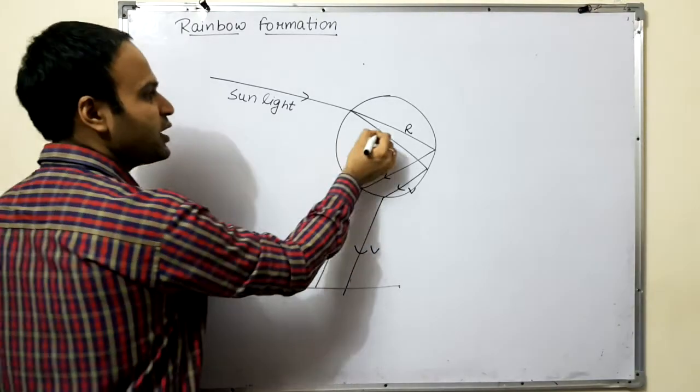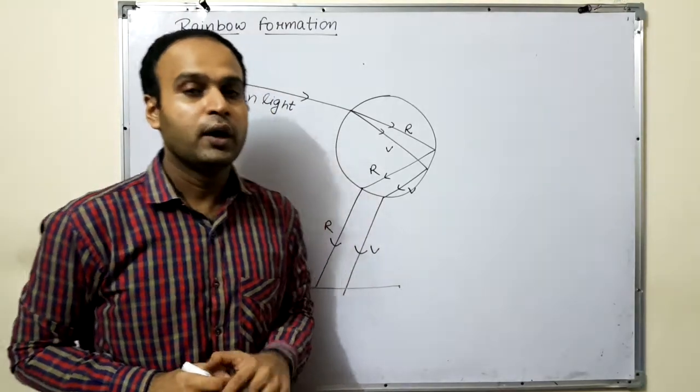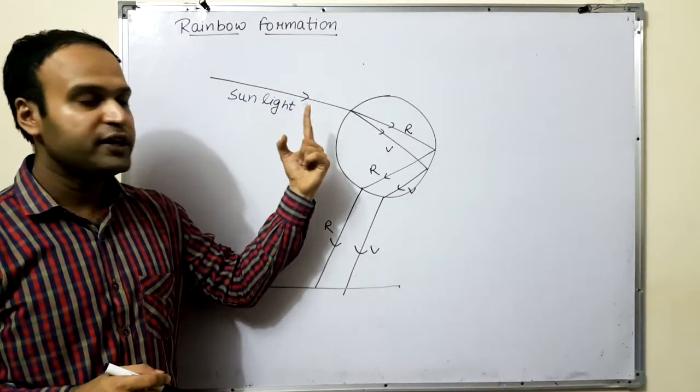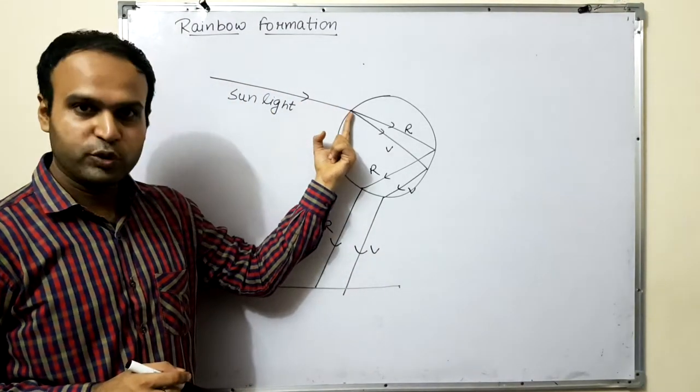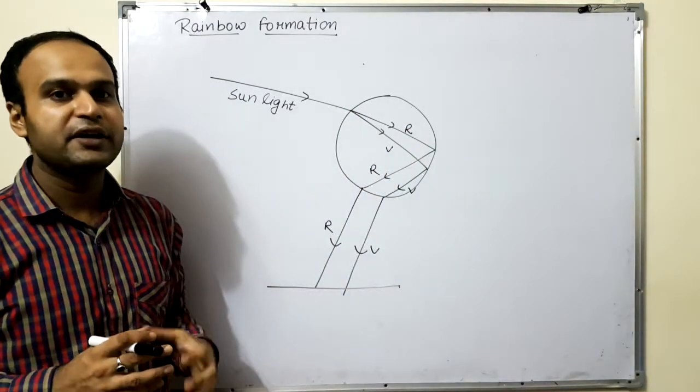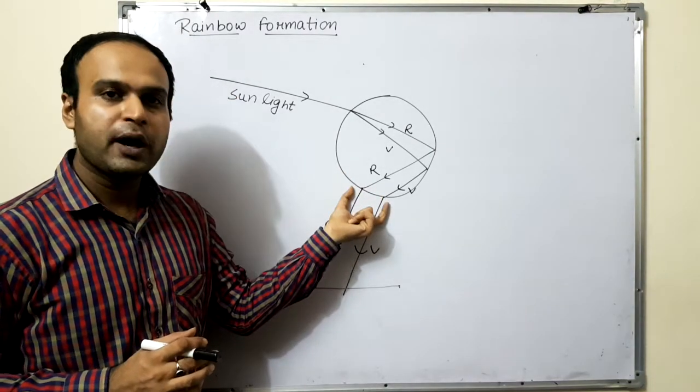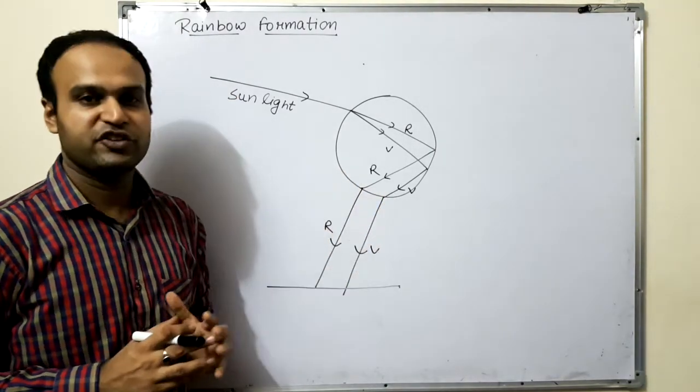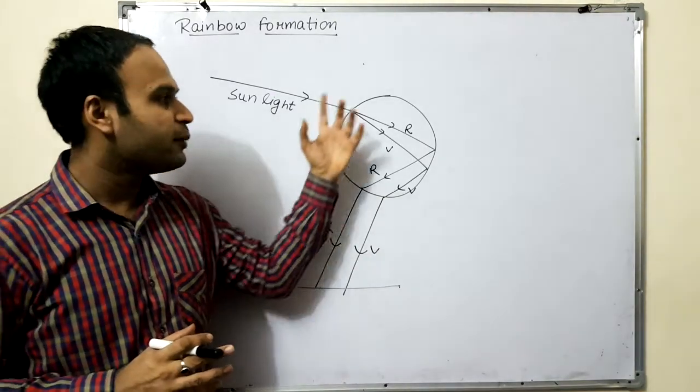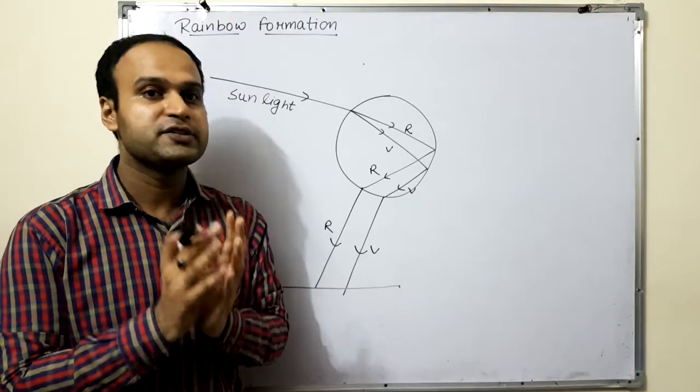So you can see that this is dispersion phenomena. But one time, just one time, there is refraction. Then after that, light will reflect internally by the phenomena TIR, total internal reflection. And at this point, you will have further refraction, which means we can see the spectrum. This is just a water droplet example.